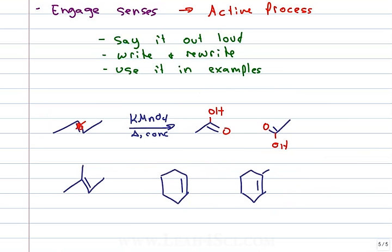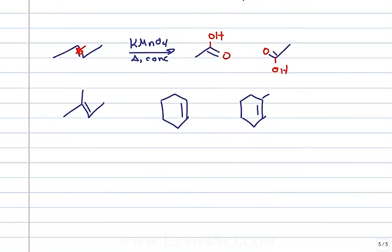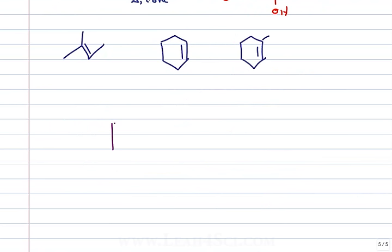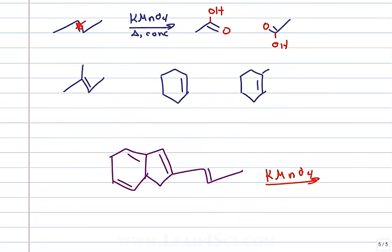If your professor gives you something complex on the exam — say a molecule with multiple pi bonds reacted with excess KMnO4 — you know exactly what to do. You've never seen it before, but you have an idea for each piece because you understand how to change it. Each cut gives you a ketone if it's not terminal, or a carboxylic acid if it's secondary. Very simple if you understand it.